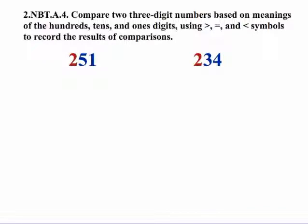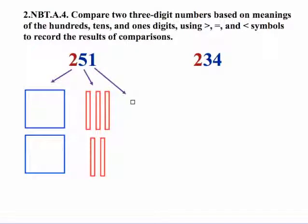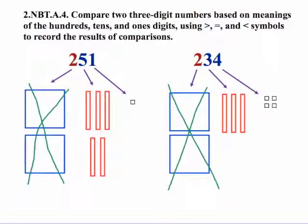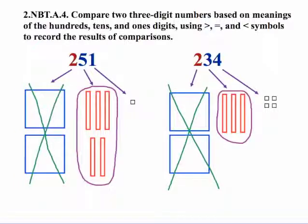Let's compare 251 and 234. Here's our representation for 251. Here's our representation for 234. Notice that we can't make a decision with the hundreds place because they're the same. So we have to go to our tens place now. So we look at this, five tens versus three tens. 50 is more than 30, so we now know that 251 is greater than 234.